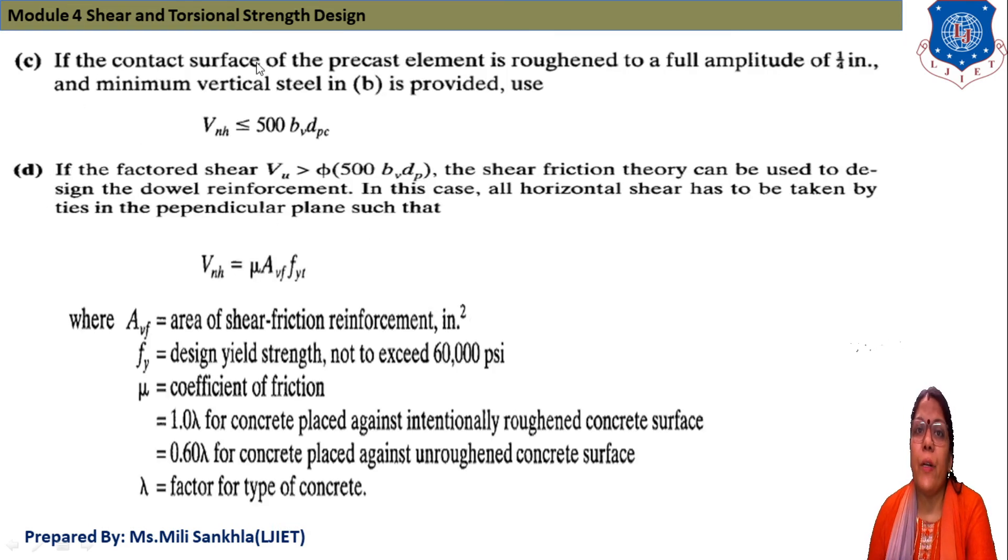If contact surface of precast element is roughed to full amplitude of 1/4 inch and minimum vertical steel is provided, then Vnh ≤ 500bv·dpc. If factored shear Vu is greater than 500bv·dpc, the shear friction theory can be used to design the dowel reinforcement.